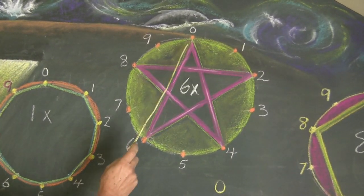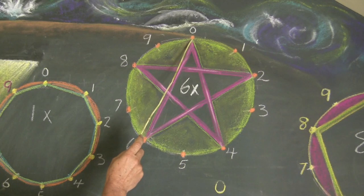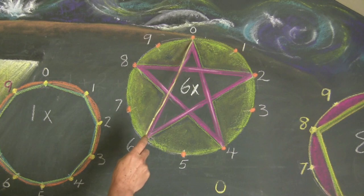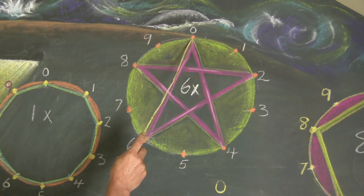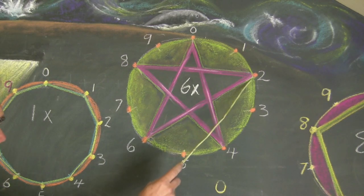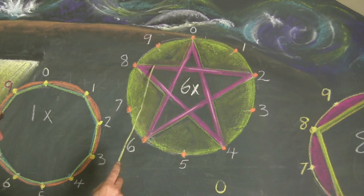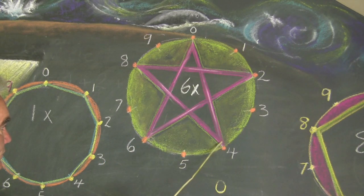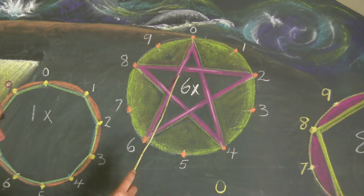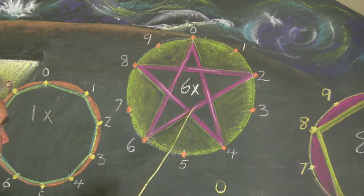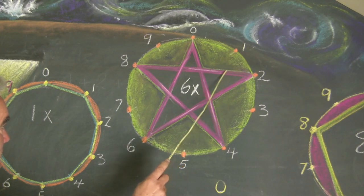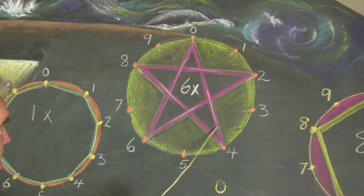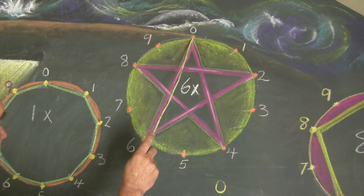The exact same circle works for the six times tables, only this time we're going to go the other way. First we went down to the four clockwise, now we're coming back down to the six. So zero times six is zero, one times six is six, two times six is twelve, three times six is eighteen, four times six is twenty-four, five times six is thirty, six times six is thirty-six, seven times six is forty-six, eight times six is forty-eight, nine times six is fifty-four, and ten times six is sixty.